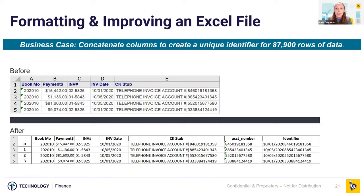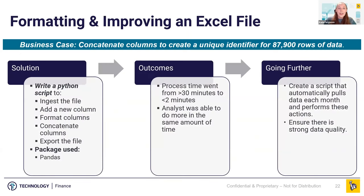The original solution was just to do it in Excel — an equal sign, select the number, and the date. But it crashed Excel every single time. This analyst would pound her head against the wall trying to get it to work each month — it would crash every hour, and she'd have to start again and hope it had saved partway through. So we needed an automated solution. We wrote another Python script that ingested the file, added a new column, formatted some of the other columns, and then concatenated it to their business requirements — all using Pandas.